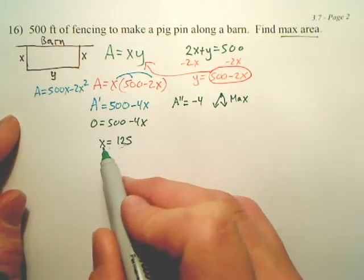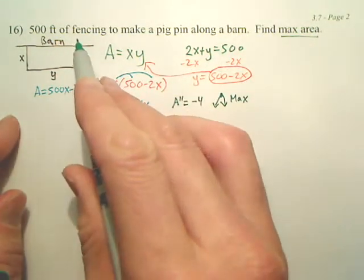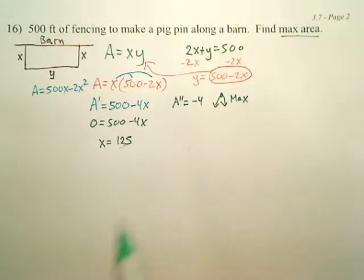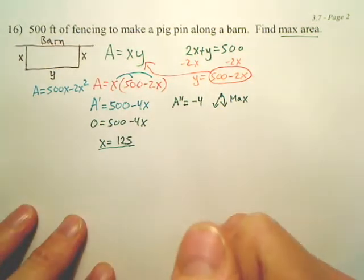So, these answers, they can't be negative because you're talking about fencing. They can't be bigger than 500 because you only have 500. Keep track of those kinds of things. Sometimes you get answers that don't make any sense. Okay, does this answer make sense? Does that one make sense? Yes.